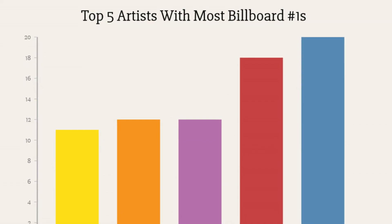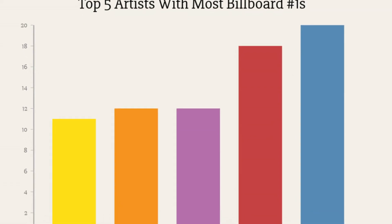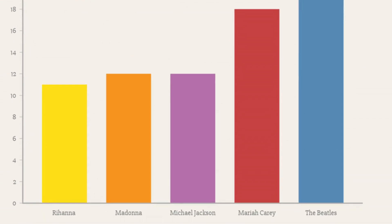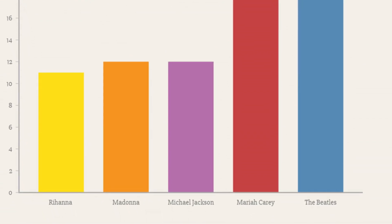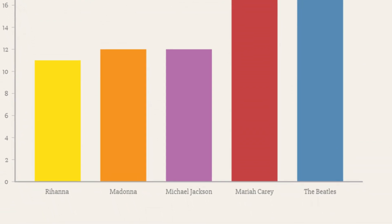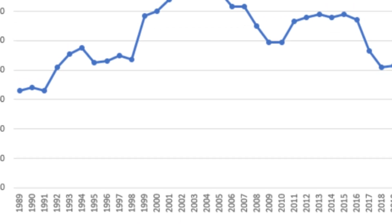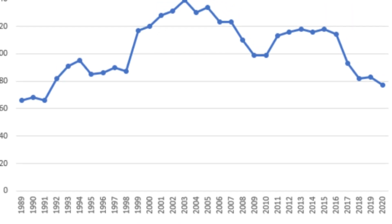A line chart is actually kind of similar to the bar chart. One of the key differences is that unlike a bar chart in which the categorical variable is on the horizontal axis, for a line chart we have time on the horizontal axis. Also, the bar chart makes use of bars while the line chart makes use of lines, but they are a bit similar to each other.